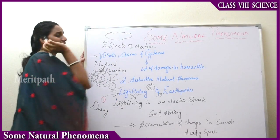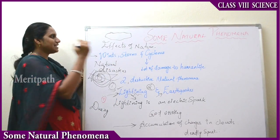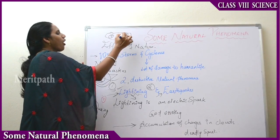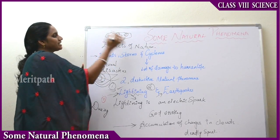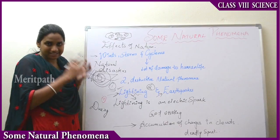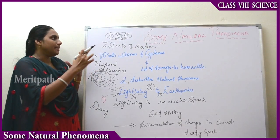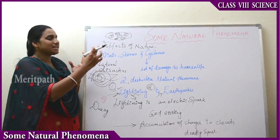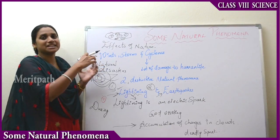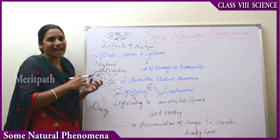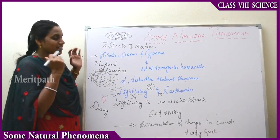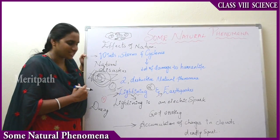The major cause of lightning is the accumulation of charges in clouds. For example, looking at the clouds, charges — both positive and negative — accumulate with heavy intensity. The collision or interaction of these charges results in the formation of light and thunder.